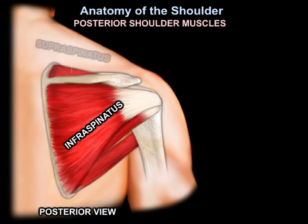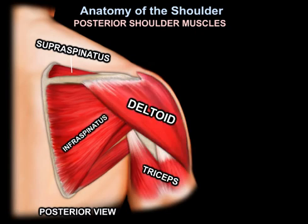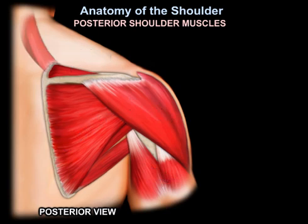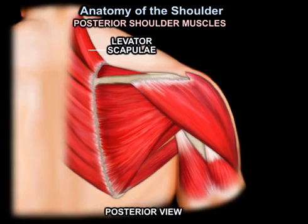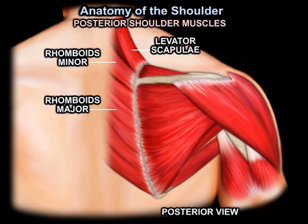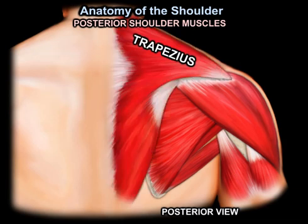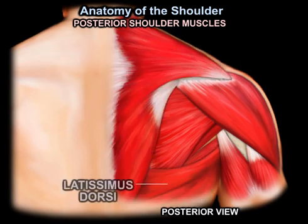Continuing with the posterior shoulder muscles, we have the supraspinatus, the triceps, and the deltoid muscle from the posterior aspect. Also visible are the levator scapula, the rhomboids minor and rhomboids major, the trapezius, and the latissimus dorsi.